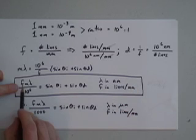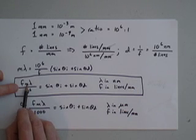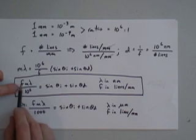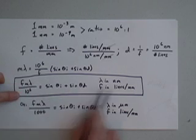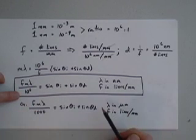You just plug in the numbers, so 600 lines per millimeter or 532 nanometers, you just do 600 times 532 over a million equals the sum of these two sines and the equation works.